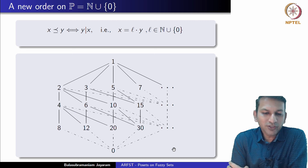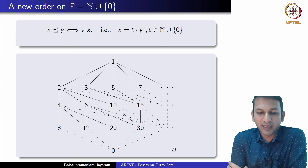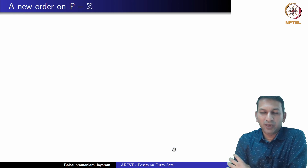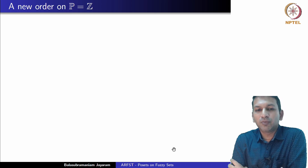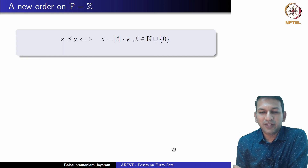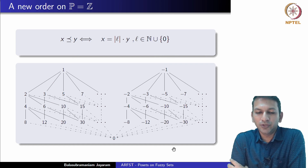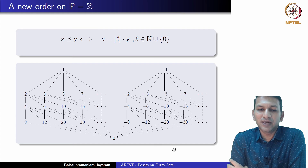While we have lost the totally ordered property of N under the natural order, what we have instead gained is a bounded-above poset on N. If you consider the set Z of all integers, while it is a chain, it is neither bounded below nor bounded above. However, you can verify that if you define the analogous divisibility order, you get a poset where 0 serves as a lower bound. It is still not bounded above, and there are maximal elements but no single greatest element.